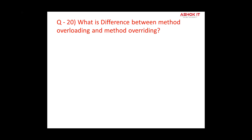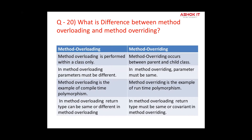Question twenty: What is the difference between method overloading and method overriding? Method overloading is performed within a class, while method overriding occurs between parent and child classes. In method overloading, parameters must be different; in method overriding, parameters must be the same. Method overloading is an example of compile-time polymorphism, where method overriding is an example of runtime polymorphism. In method overloading, the return type can be same or different; in method overriding, the return type must be the same or covariant. These are the top 20 core Java interview questions — thanks for watching, please like and subscribe for more updates.